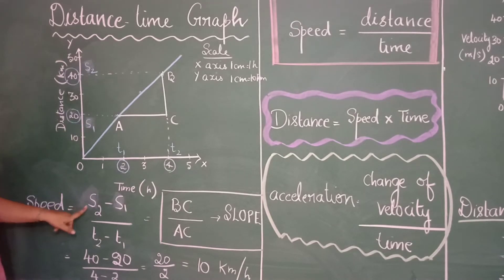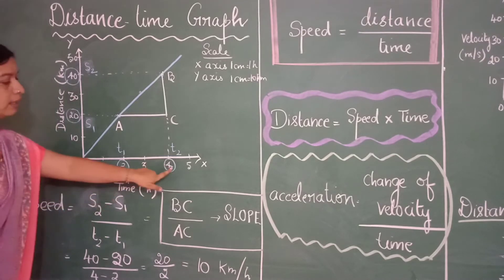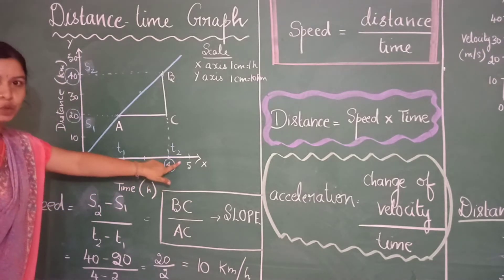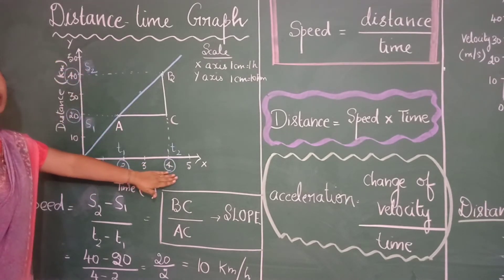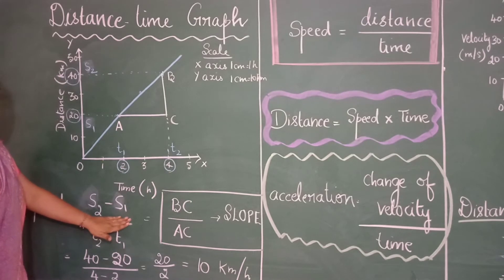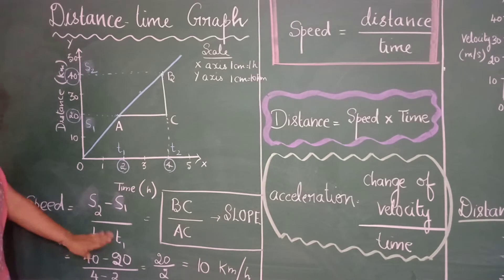So speed equal to distance covered by the object which is s2 minus s1 by time interval which is t2 minus t1. You will always take the final distance and the final time first followed by the initial distance and initial time. So s2 minus s1 by t2 minus t1.